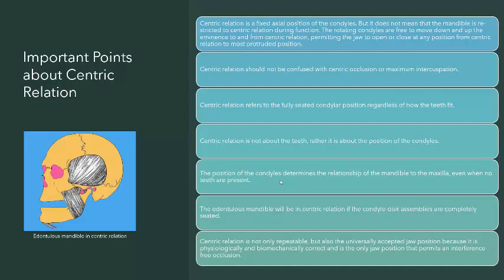This permits the jaw to open or close at any position from centric relation to the most protruded position. Centric relation should not be confused with centric occlusion — the right term for centric occlusion is maximum intercuspation or intercuspal position. Centric relation refers to the fully seated condylar position regardless of how the teeth fit. It is about the position of the condyles in the glenoid fossa with the articular disc properly seated.